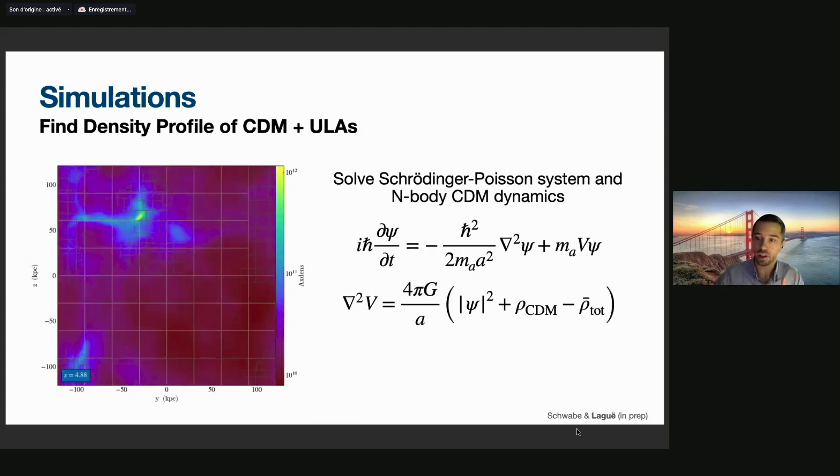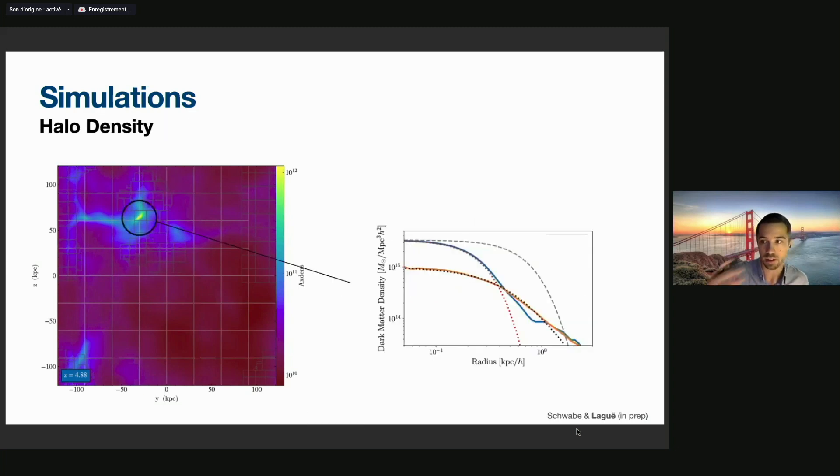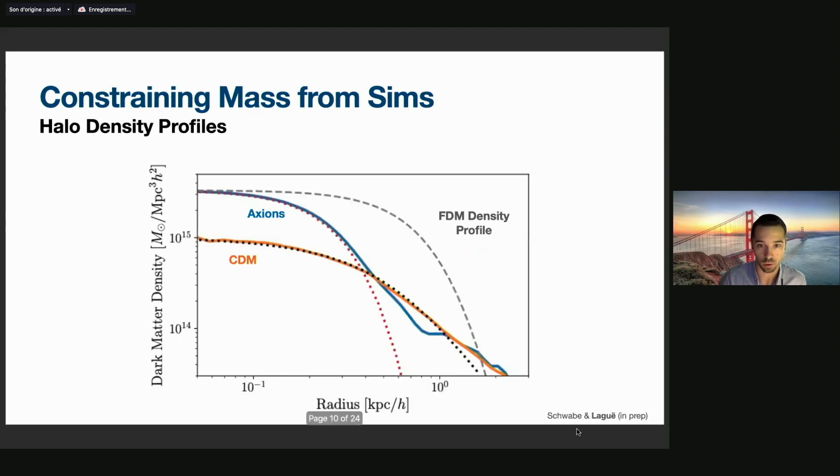By running simulations involving these two equations together, what we find is that we form halos that are slightly fuzzier than usual halos in the pure CDM case. This is a simulation code that I'm co-developing with Bodo Schwabe at the University of Göttingen. We are about to make this code public, so keep your eyes peeled for the archive for that. Extracting the density profile of our halo, we can see that our dark matter will have two components: one for axions and one for cold dark matter.